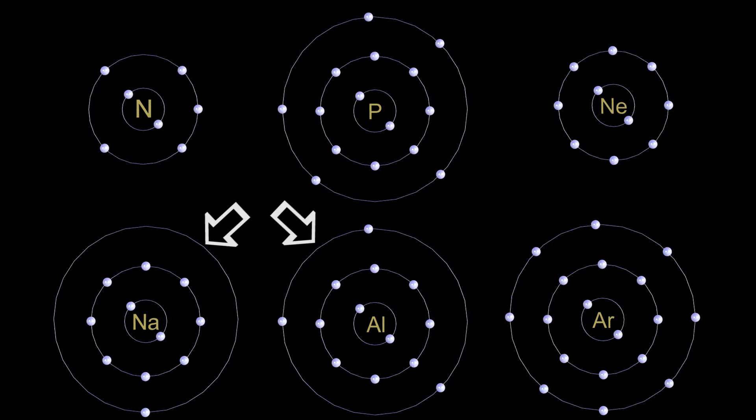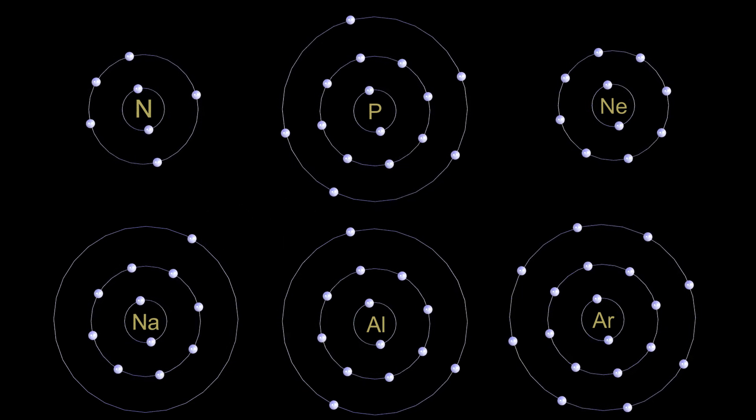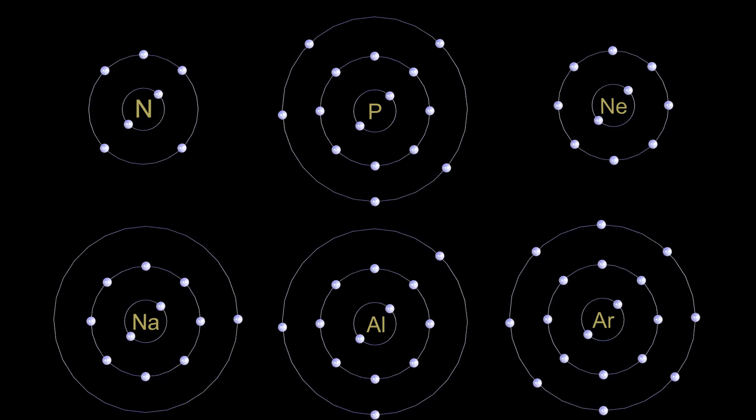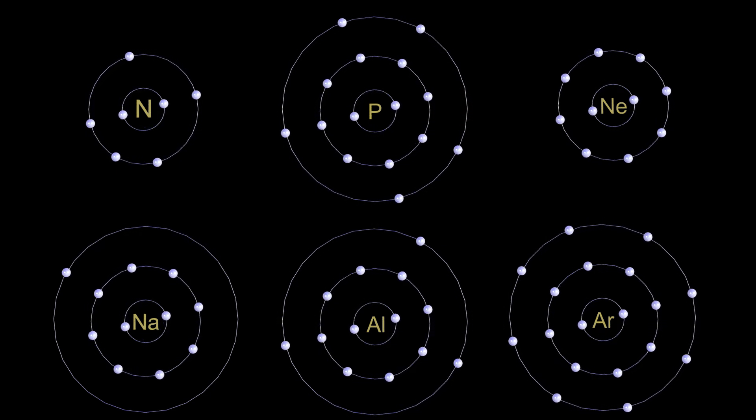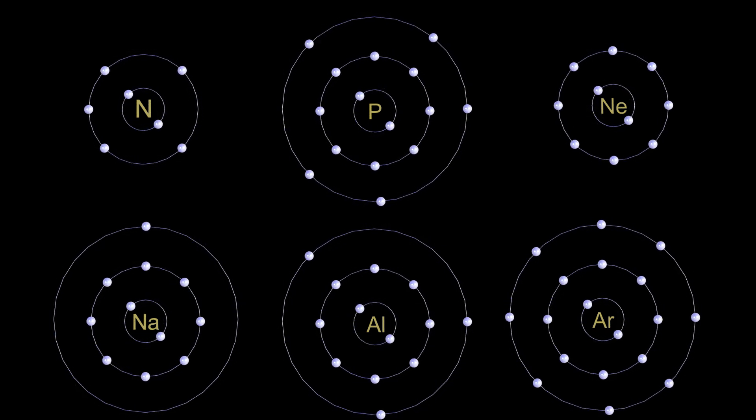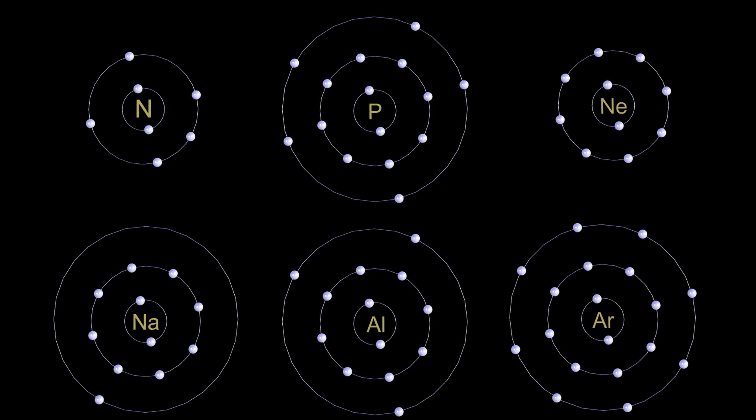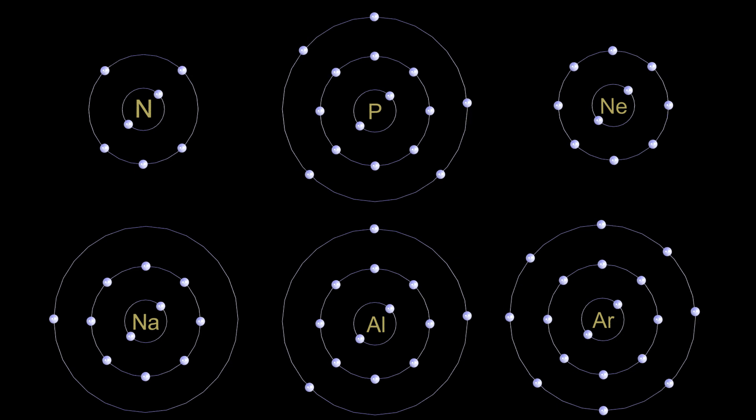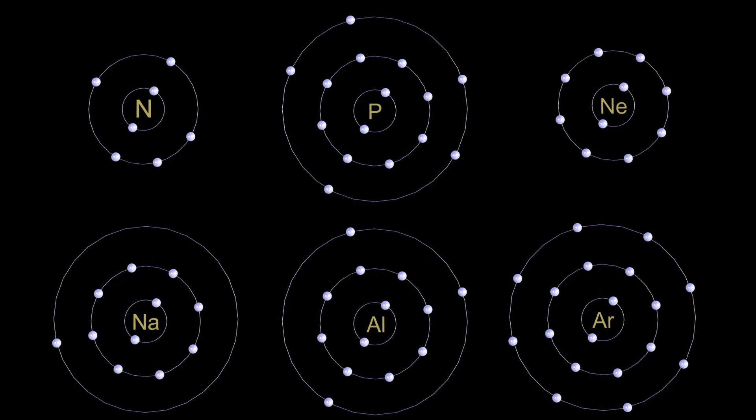Sodium and aluminum, however, are in a slightly different situation. For these two elements, it is much easier for them to give away their electrons than to try and steal them. Because they need to try and steal so many different electrons, it is much easier for sodium to just donate or give away one electron, and for aluminum, it will need to donate three electrons to become stable.